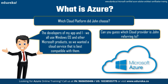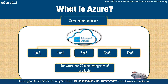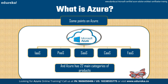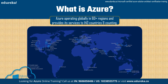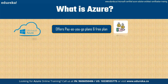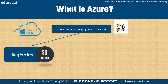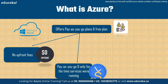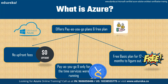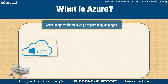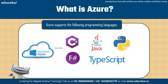Azure provides five distinct types of services: Infrastructure as a Service, Platform as a Service, Software as a Service, Container as a Service, and Functions as a Service. Azure has 22 main categories of products and over 600 services total. It operates globally in 60-plus regions and provides services to 140 countries and counting. Azure offers pay-as-you-go plans with no upfront fees, and a free basic plan valid for 12 months. Supported languages include C#, F#, Java, TypeScript, and Python.